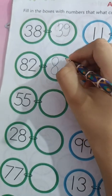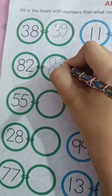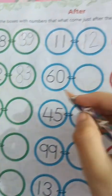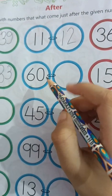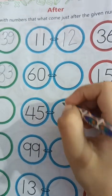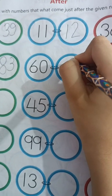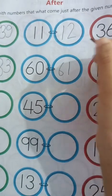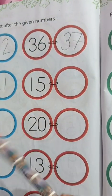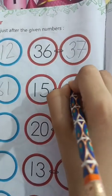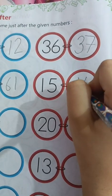83 comes after 82. 60. 60 ke baad aata hai 61. 61 comes after 60. 15 ke baad aata hai 16. 16 comes after 15.